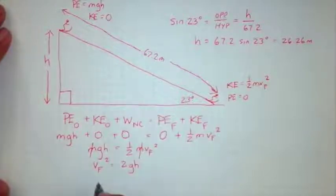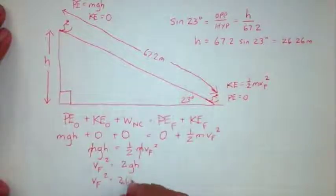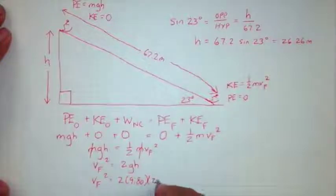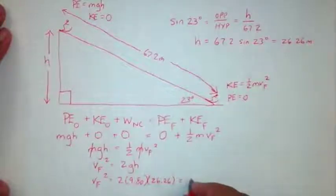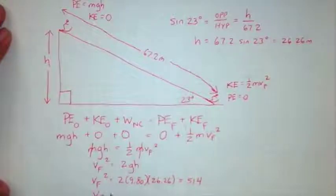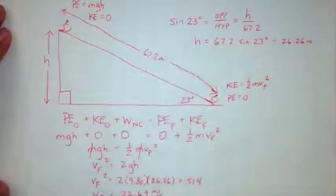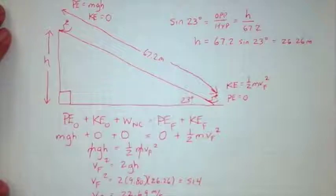This problem has three significant figures, but I'm keeping the extra significant figure here because this is an intermediate calculation. Well, now that we have the vertical height of the slope, we can plug in our numbers here. Say that v final squared equals 2 times 9.80 times 26.26. All right, and that is 514, meaning that our final velocity is going to be 22.69 meters per second, which we would report as 22.7 meters per second due to significant figures. So our final answer is the final velocity of the skier at the bottom of the slope is 22.7 meters per second, which is exactly the result that we got in the previous example using Newton's second law and kinematics. Thanks.